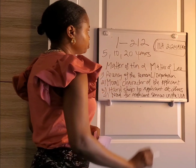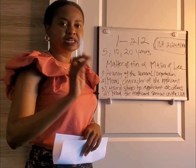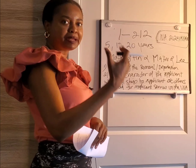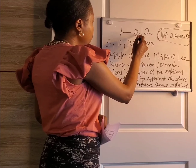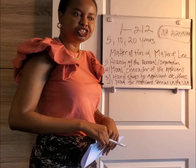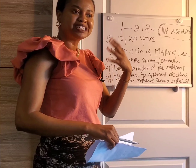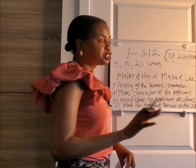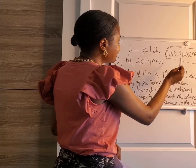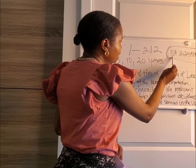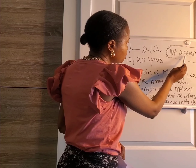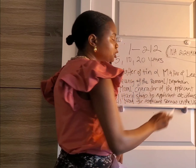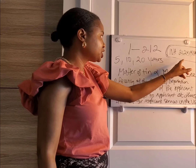If you have been removed from the United States, can you reapply? The I-212 is an application to seek consent — permission to reapply — especially if you have been removed under Immigration and Nationality Act section 212(a)(9)(A)(i). We are going to be focusing on this section.